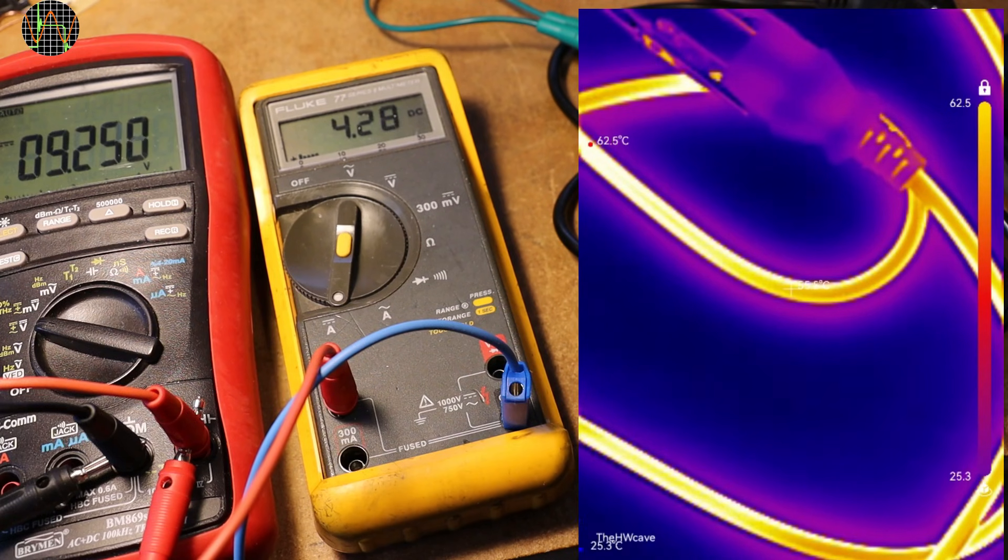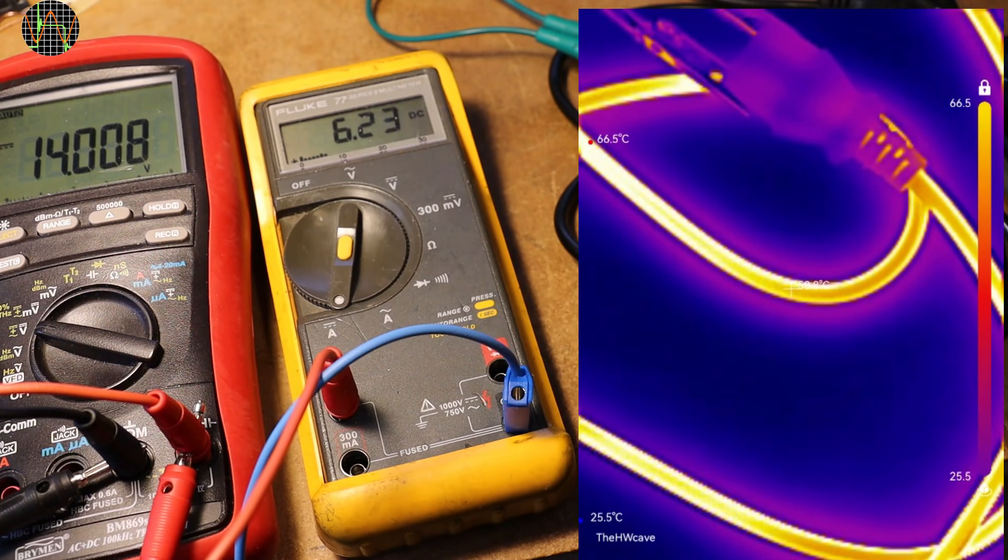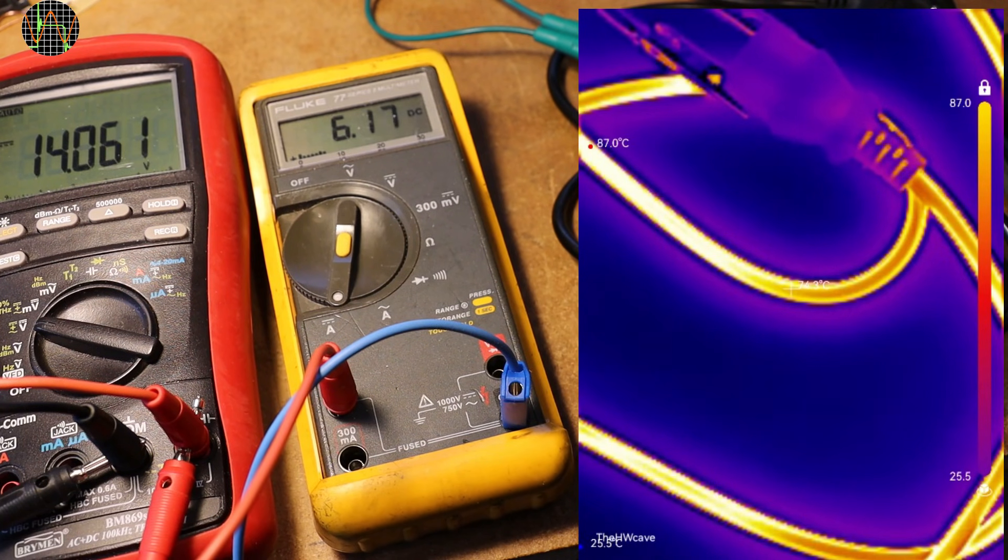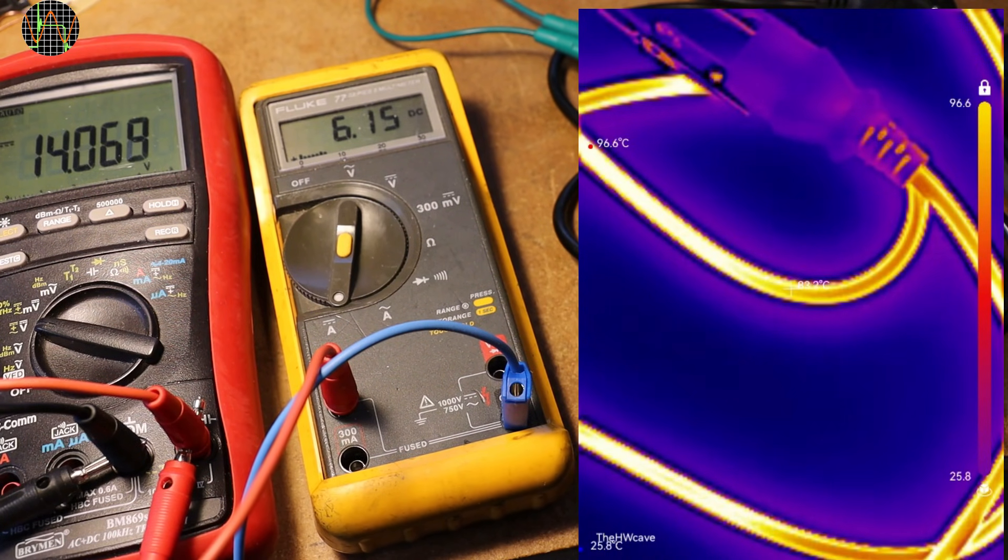Why stop there? 6A, and now the cable is dissipating 84W. I should point out that in the UK you can draw up to 13A from a normal wall socket.